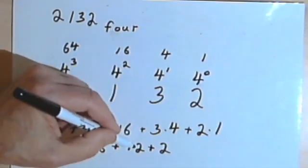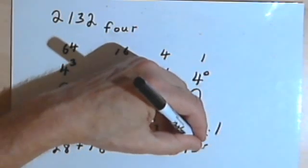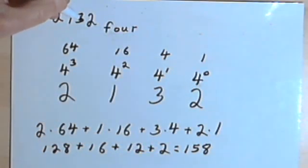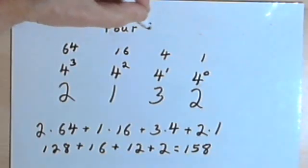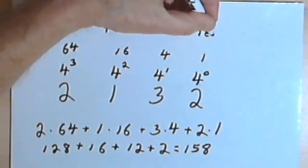And now if we add those up, 128 plus 16 is 144. 144 plus 12 is 156, and 156 plus 2 is 158. So that means that 2132 base-4 is equal to 158 base-10.